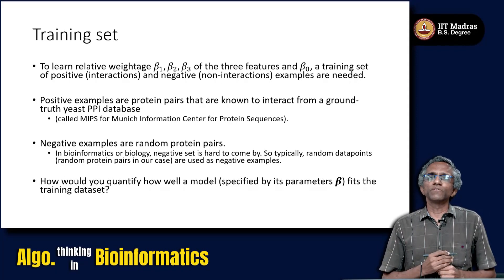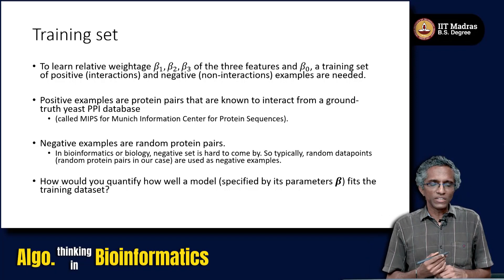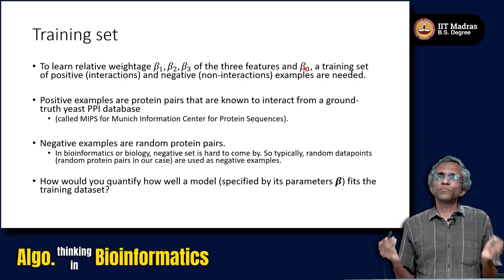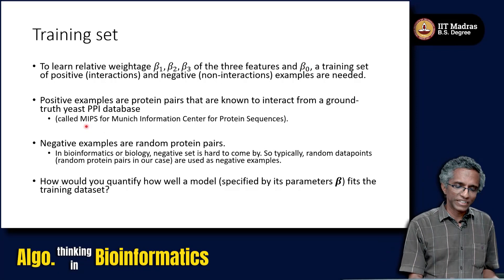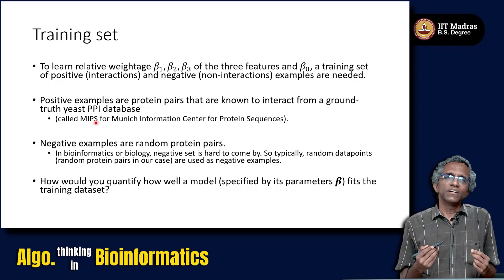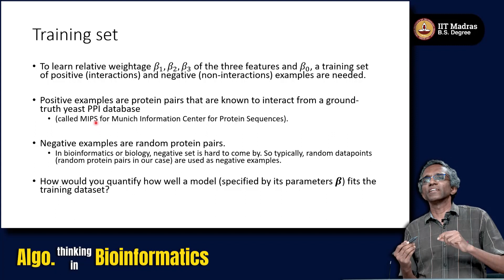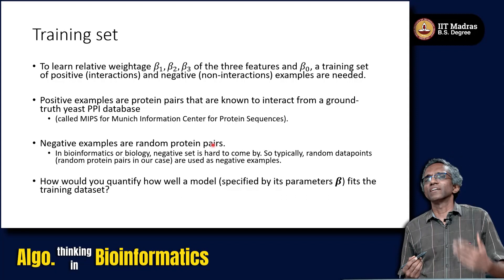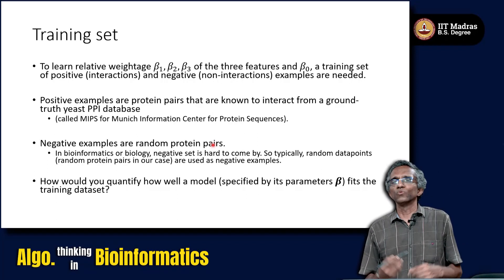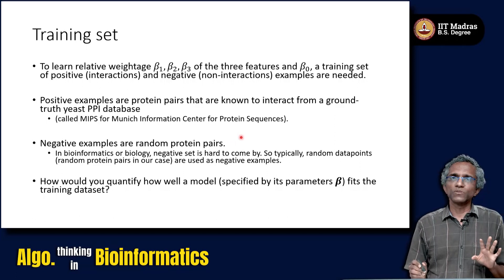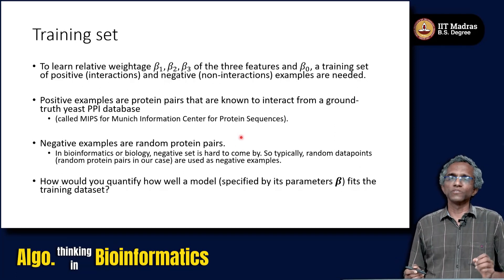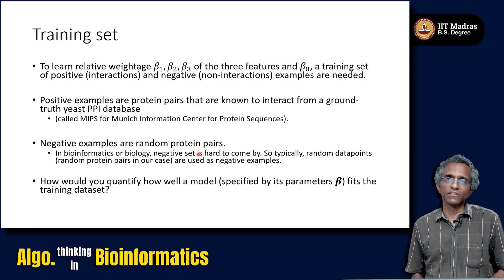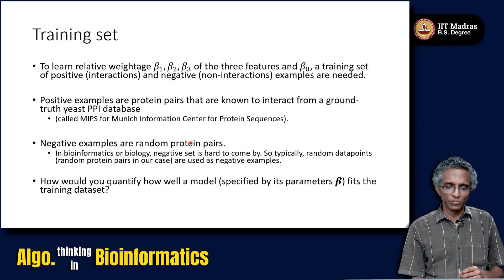A training set is needed with positive and negative examples. The positive examples are protein pairs known to truly interact in yeast, coming from a database called MIPS. Negative examples are often hard to come by in bioinformatics, so we resort to taking random pairs of proteins and assume they do not truly interact in the underlying yeast system — though this is a limitation, as some random pairs may actually interact. We have to rely on random protein pairs as negative examples.